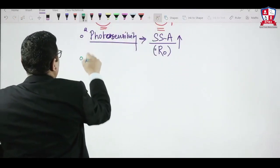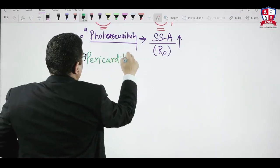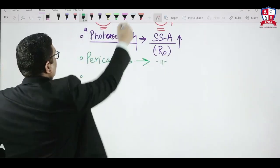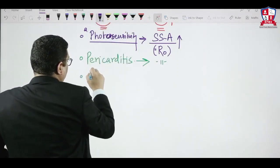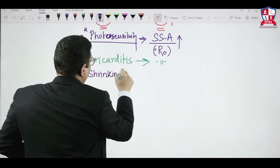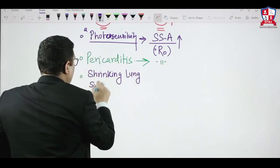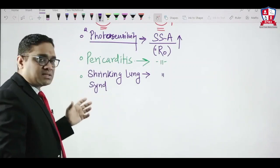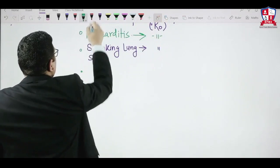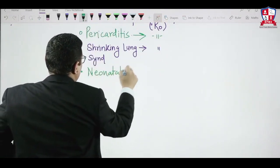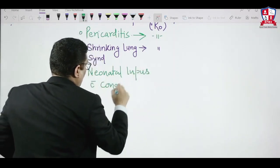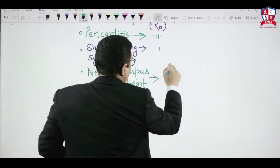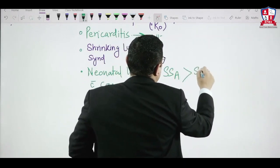For pericarditis (All India 2016), the corresponding antibody is again Ro antibody. For shrinking lung syndrome (NIMHANS and All India 2015), the answer is also Ro antibody. For neonatal lupus (All India 2017) with congenital heart block, both SSA and SSB antibodies are elevated.